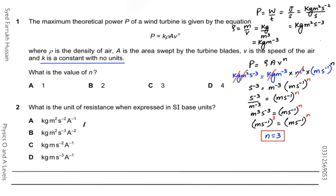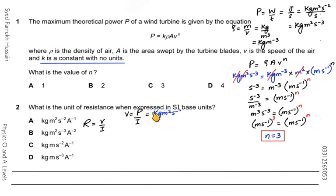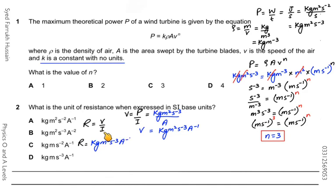To find the SI base units for resistance, use Ohm's law R = V/I. Since volt is not an SI base unit, we first find the SI base unit for V using P = IV, giving V = P/I. Since P is kg·m²·s⁻³ and I is amperes, V = kg·m²·s⁻³·A⁻¹. Substituting into R = V/I gives R = kg·m²·s⁻³·A⁻², so B is the correct answer.